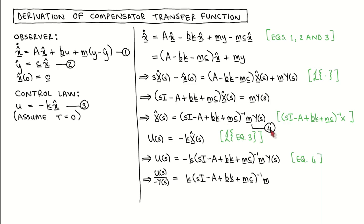Now we take the Laplace transform of the control law, which produces this line. We combine this with equation 4 to get rid of x̂(s), and then divide by minus Y(s) to get to the result we want to derive. This result allows us to interpret the state variable compensator as a classical controller.